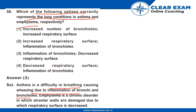In emphysema, it is a chronic disorder in which alveolar walls are damaged, due to which the respiratory surface is decreased. So the correct answer is the third option: in asthma, inflammation of bronchioles, and in emphysema, decreased respiratory surface.